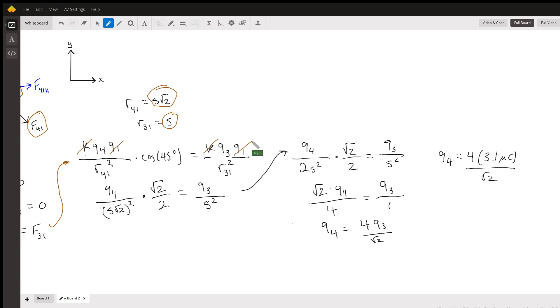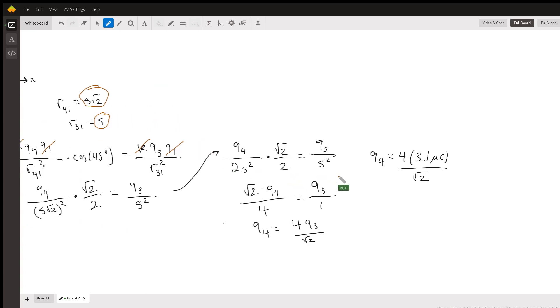We plug in our distances, so now we have q4/(s√2)^2 times the cosine of 45 degrees, which is √2/2, equal to q3/s^2. Going on to simplify that, we'll have q4...